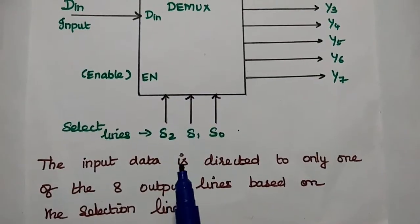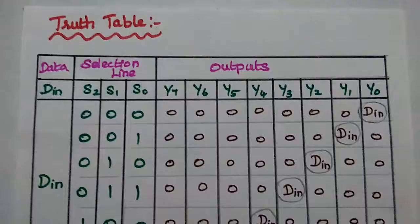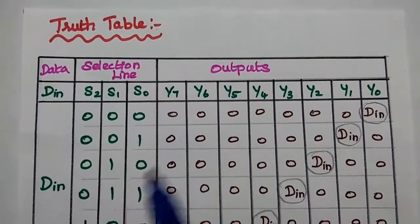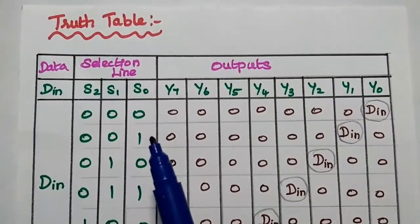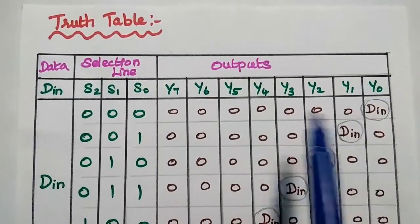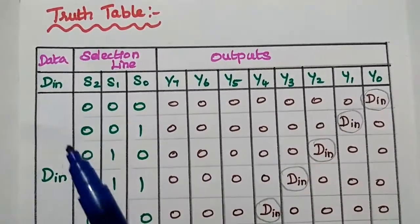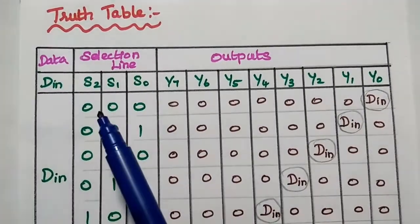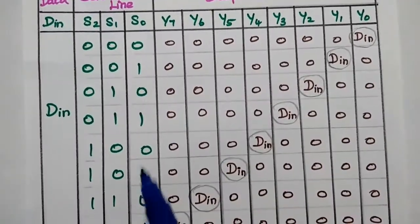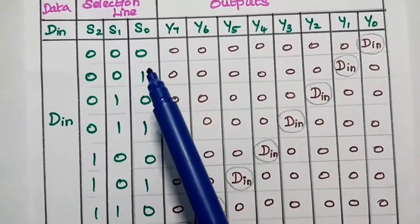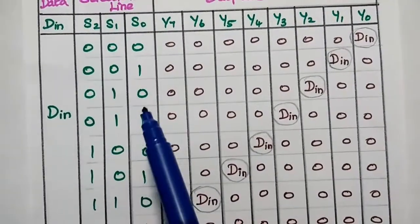The operation of this 1-to-8 demux can be explained using the truth table. This truth table will relate the input data, the combination of selection lines, and their respective output lines. Here we are using 3 selection lines, so we need to have 8 possible combinations.